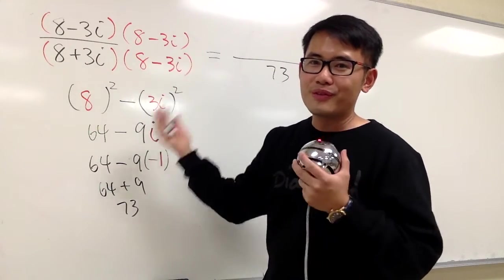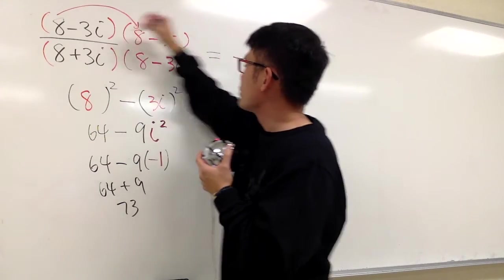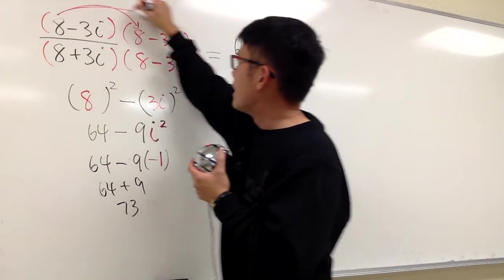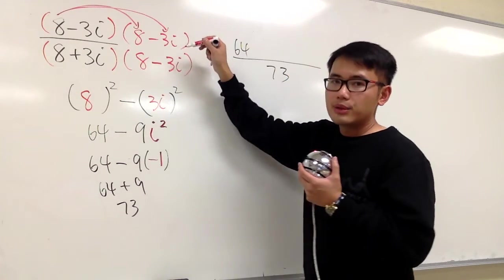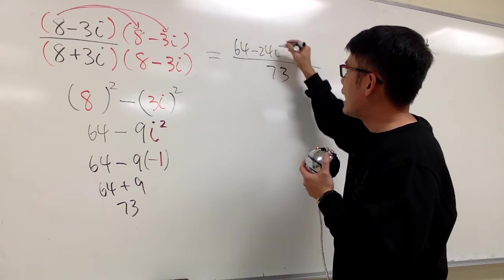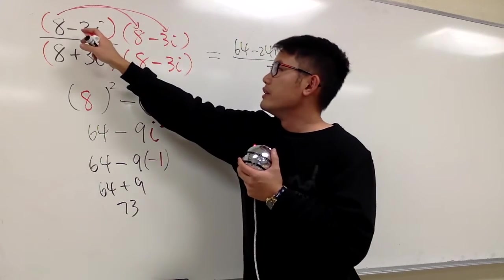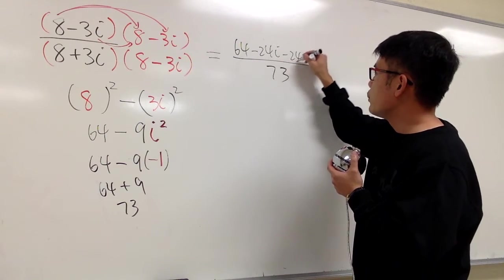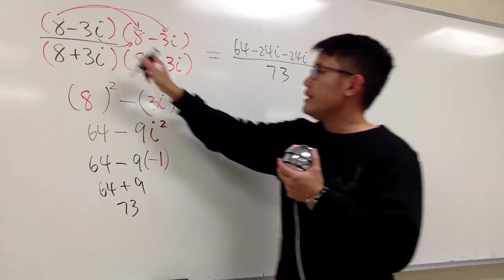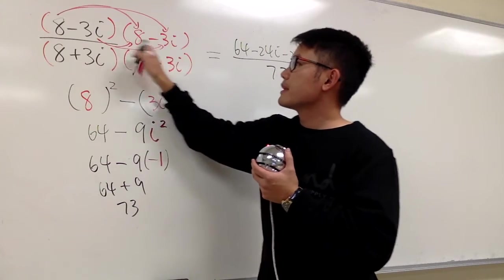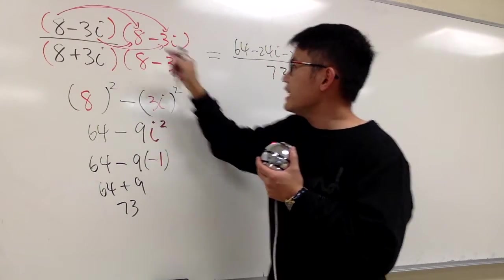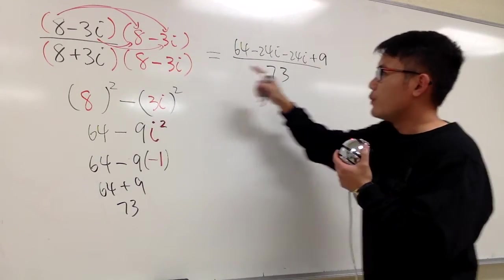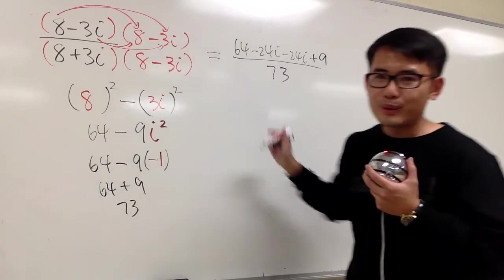Okay, let's look at the top. We have to do the foil. So, let's take the 8 times the 8, which is going to give us 64, and then 8 times negative 3i is going to give us negative 24i. And then continue, negative 3i times 8, negative 3 times 8 is negative 24, and we maintain the i. And then at the end, this times that, negative times the negative give us positive, 3 times 3 is 9, and then we also have to do i times i, which is i squared.